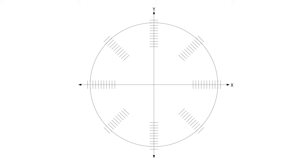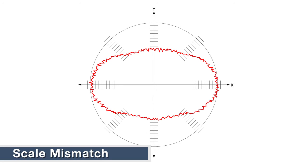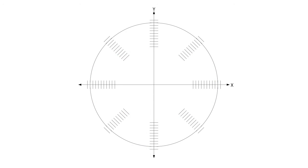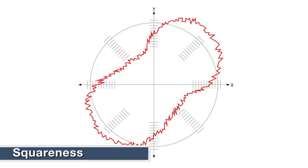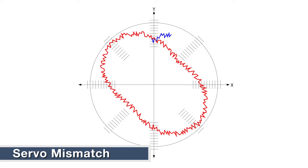Scale mismatches: when the scales of the two axes are not aligned. Squareness: when the rails of the two axes are not at 90 degree angles.